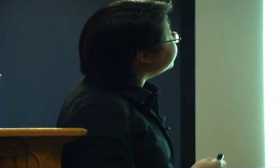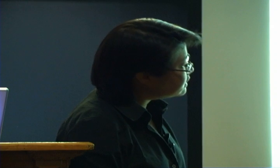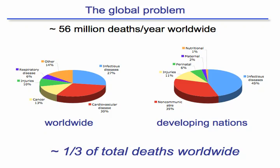There are about 56 million deaths per year worldwide. When you break down the causes of deaths, 27 percent is due to infectious diseases. Only recently did cardiovascular disease surpass this. When you look into developing nations, 45 percent of deaths are due to infectious diseases. Clearly it's a huge problem.